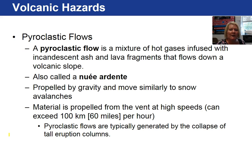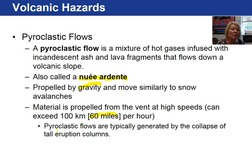Pyroclastic flows are quite dangerous. It is a mixture of hot gases infused with ash and lava fragments that flow down a volcanic slope. Nuée ardente is the term used to describe a flow that races down the flank of a volcano driven by gravity. Material is propelled and ejected from the vent at very high speeds and can travel quite quickly — 60 miles per hour, for example. Pyroclastic flows are generally the result of the collapse of a tall eruption column.